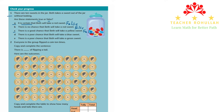Statement D says there is a poor chance that Bet will take a blue sweet. This one is true. The possible outcome to take a blue sweet is not much — we can say it is about 30% or less. So there is a poor chance, and this statement is true.